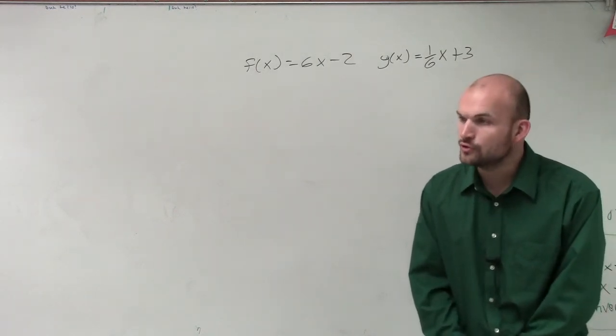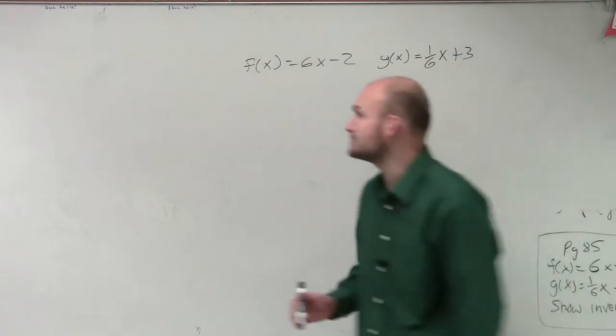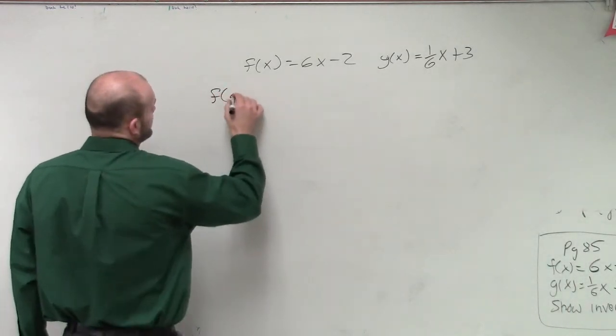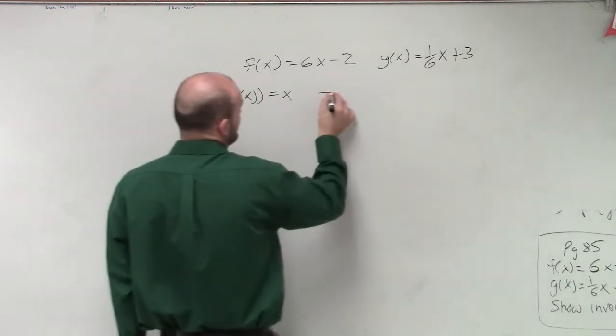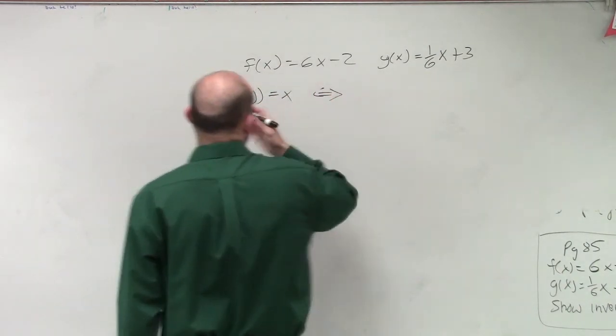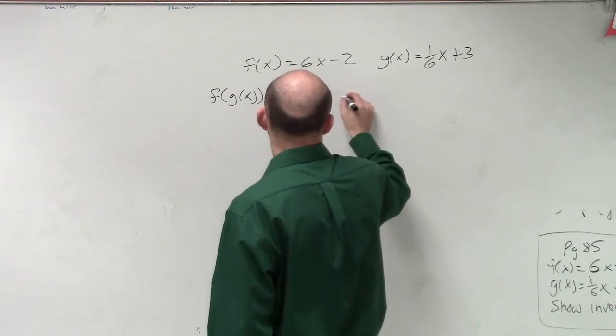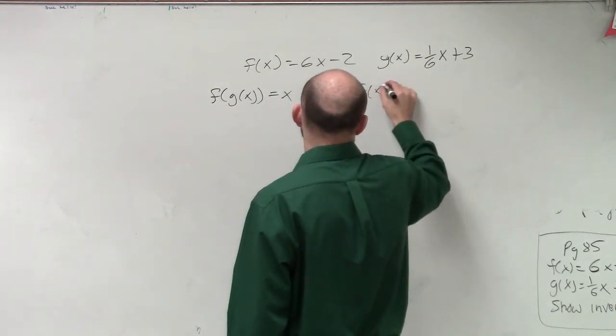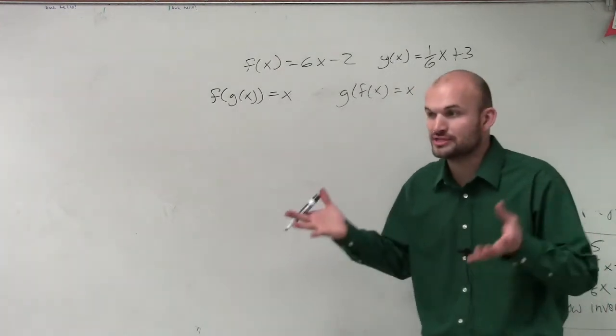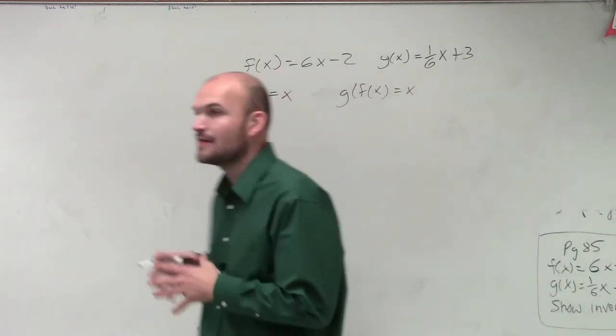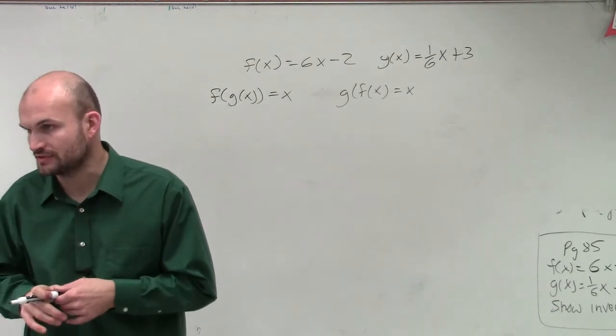The other way to prove that they're going to be inverses is by working this: If you do f of g of x equals x and you have g of f of x equals x. So if you do the composition of your functions both ways and you get x, then they are going to be inverses of each other.